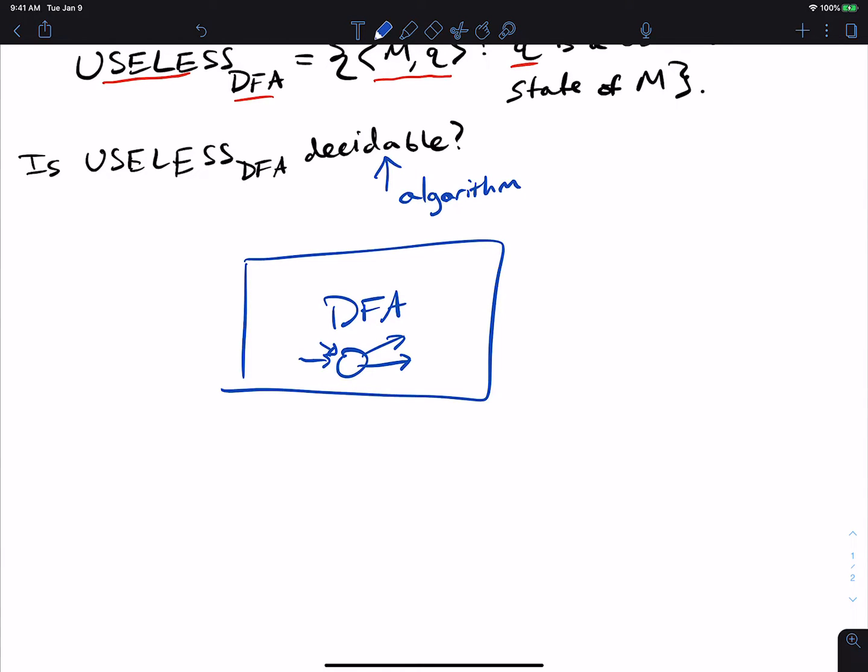What we can think about is: if there is some way that can go from the start state, go through this so-called useless state, and then eventually go to a final state, then this state is not useless. That indicates to us that if I try to delete this state, the language doesn't change.